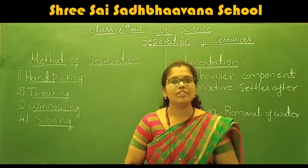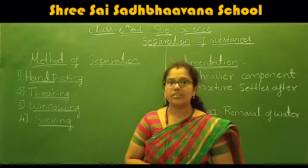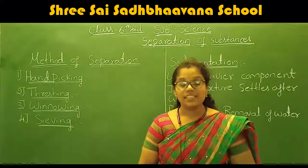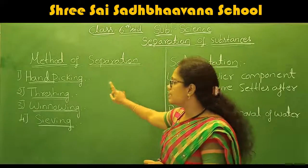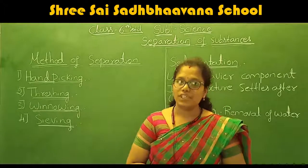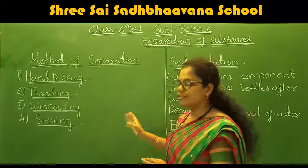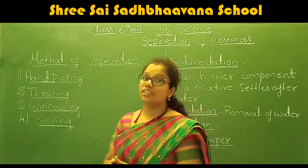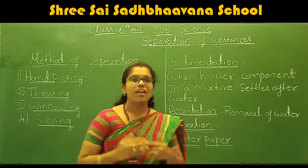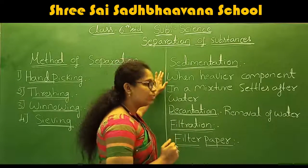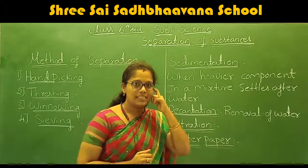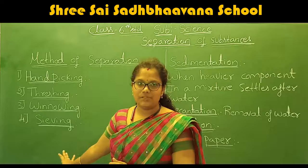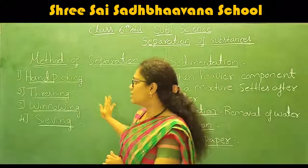Understood the four important methods of separation. The four methods are: hand picking, threshing, winnowing, and sieving. These are the four important methods of separation. These separations are physical methods of separation — we use some physical energy for the separation.